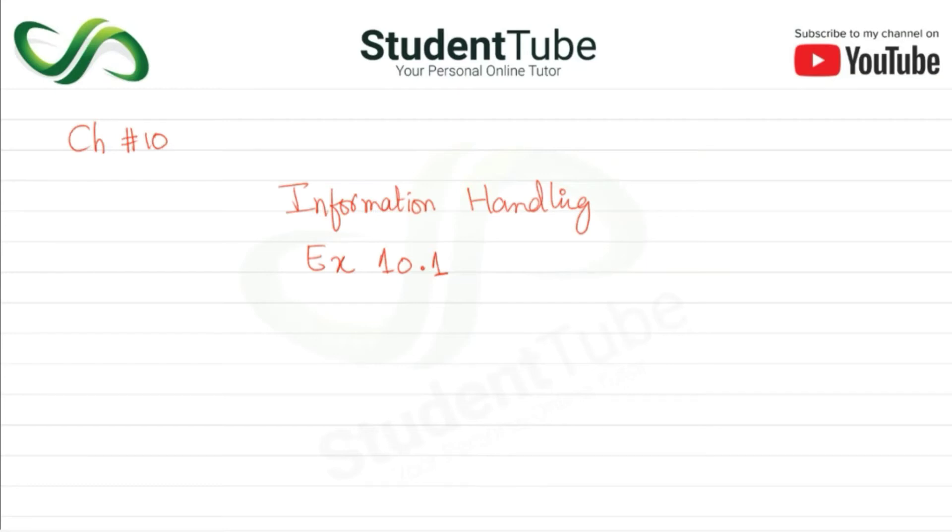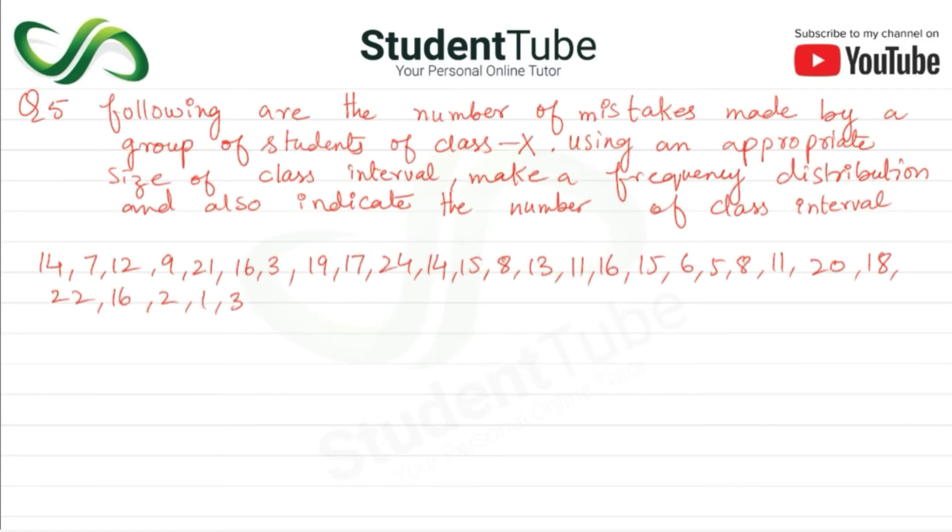Assalamu alaikum, welcome to Student Tube. In today's lecture, we are in chapter 10, information handling, exercise 10.1. Question number 5: Following are the numbers of mistakes made by a group of students of class 10. Using an appropriate size of class interval, make a frequency distribution and also indicate the number of class intervals.